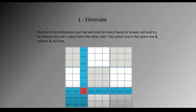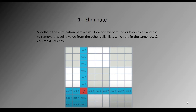The first sub-part is the elimination step. In the elimination part, we look at every found cell and try to remove that cell's value from the lists of other cells which are in the same row, column, or 3x3 box. For example, if we have 7 here and it is already found, we have to remove 7 from the list of all cells in the same row, column, and 3x3 box. This is called elimination.